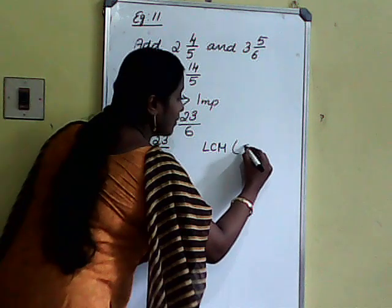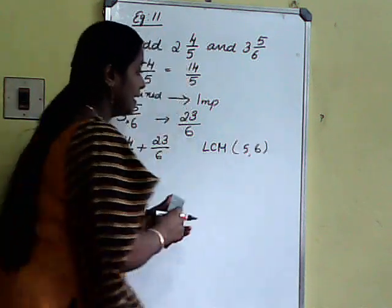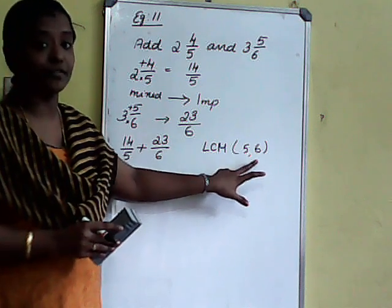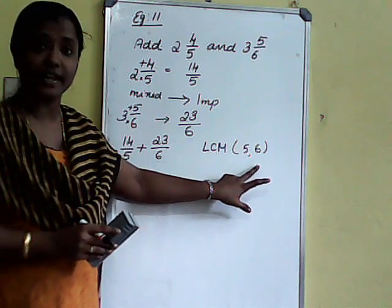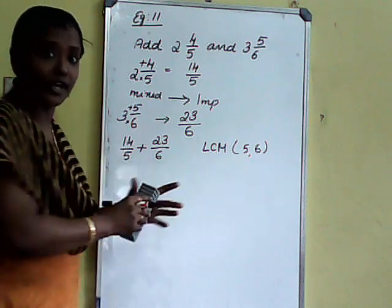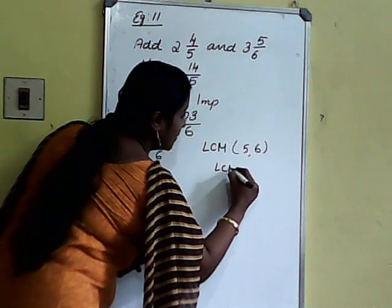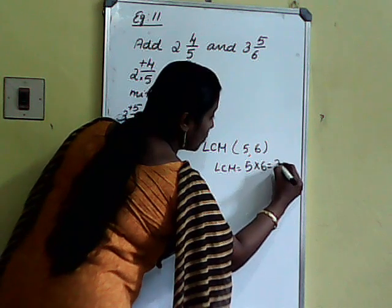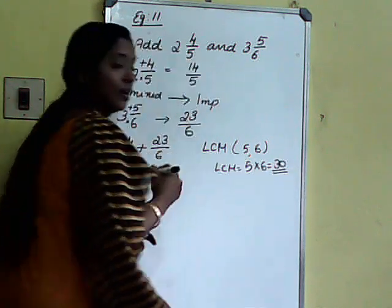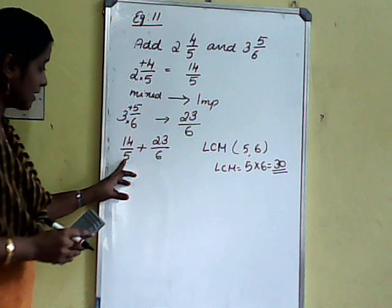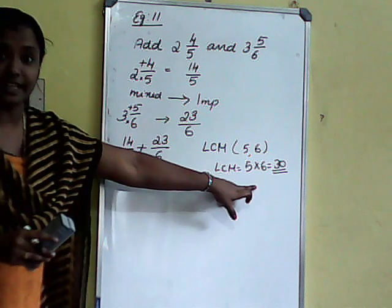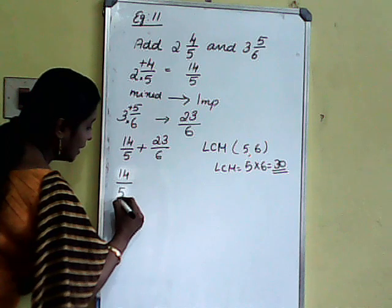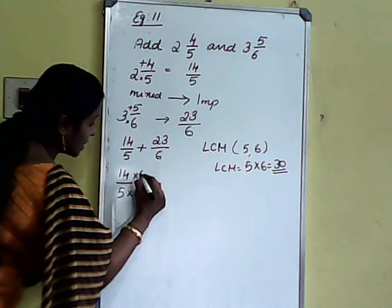LCM of 5 and 6. There is no common factor between 5 and 6, so what is their LCM? Their product. So LCM equals 5 into 6, that is 30. Now we want to convert these denominators to 30. So 14 by 5, multiply by 6 over 6.